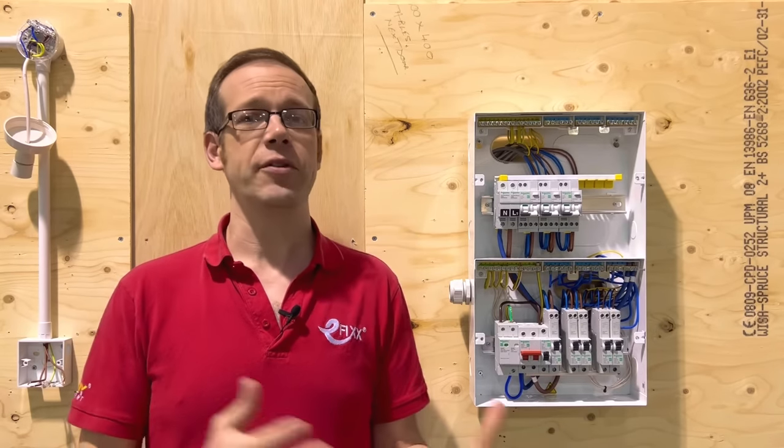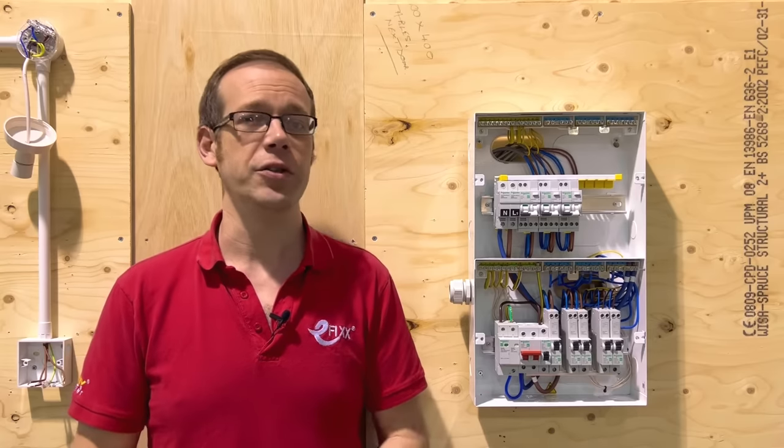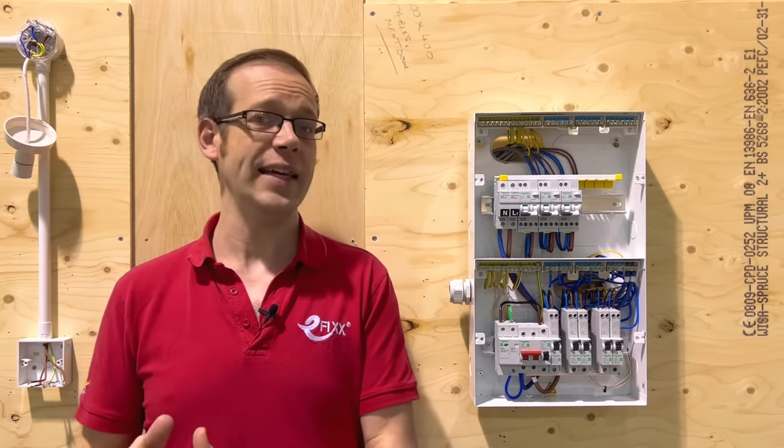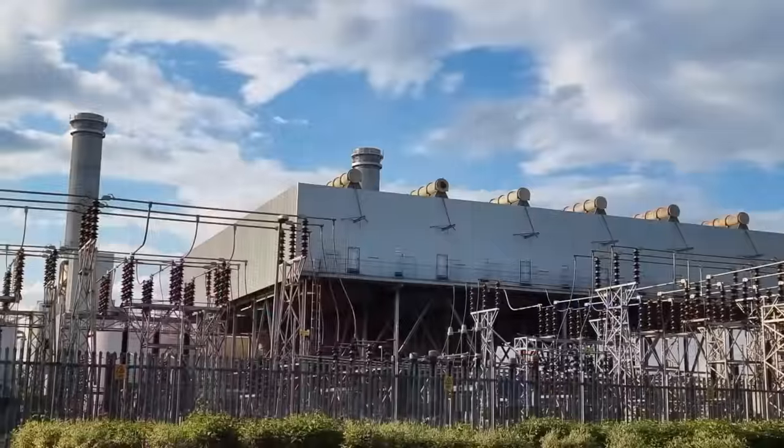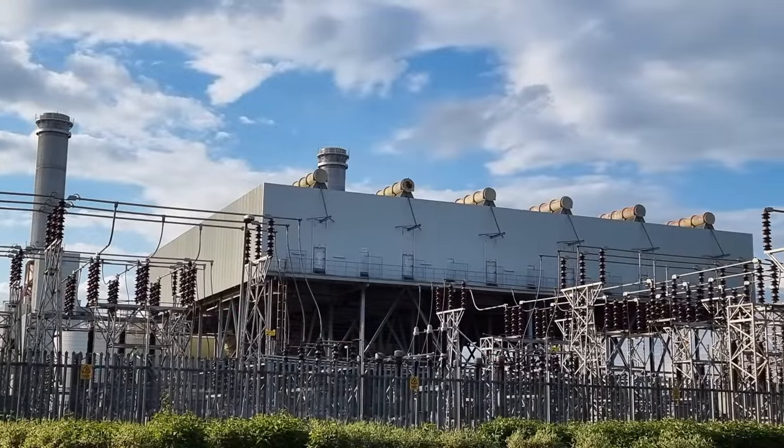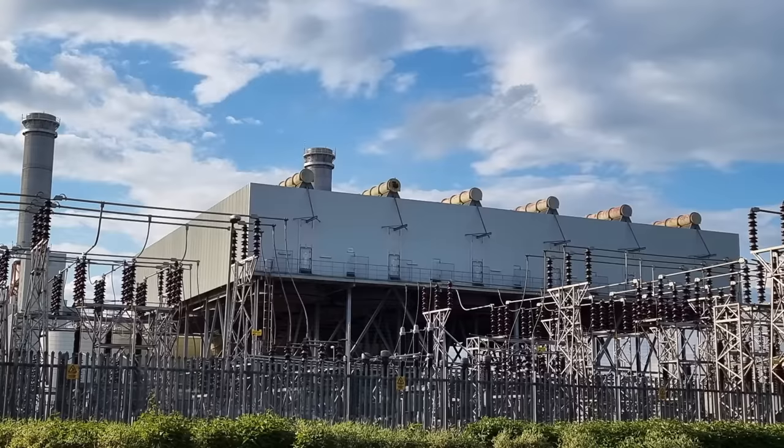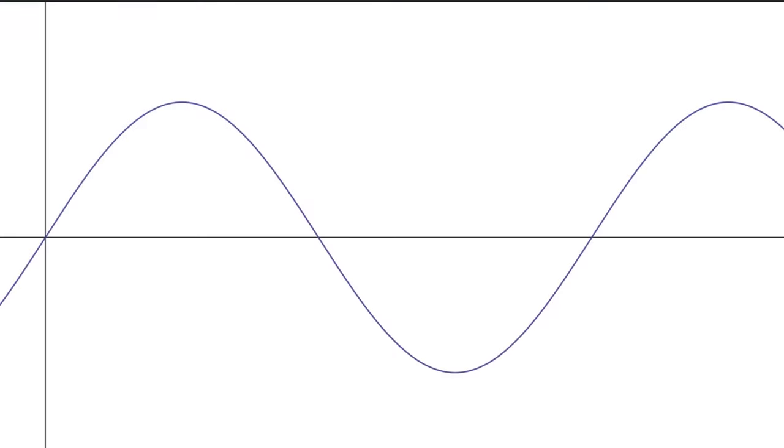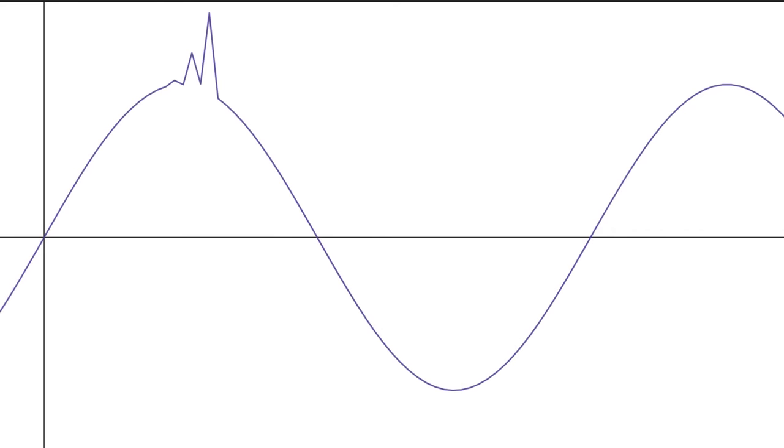Well, most electricity distribution systems around the world use alternating current or AC to transmit electricity from the places that it's generated and get it to the places that it's needed. Now we like to think of this AC supply as being a beautifully consistent and curvy sine wave, and for the most part it is. However, there are things that can happen along the supply network and even in properties that can cause it to become a bit distorted and spiky.